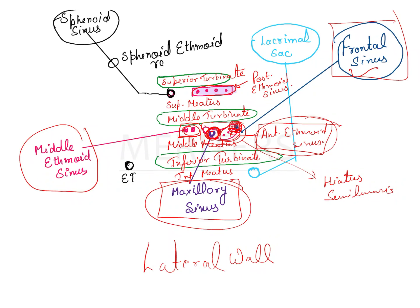Now in the superior meatus, we see the opening of the posterior ethmoid sinus. According to some books, the opening of the sphenoid sinus is also seen in the superior meatus, but other books state it is seen above the superior turbinate near the sphenoethmoidal recess, where the sphenoid sinus opening can also be located.